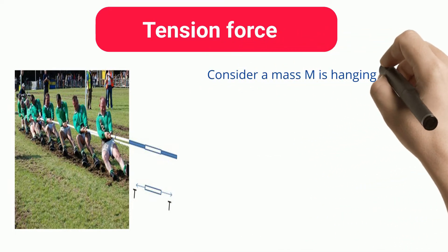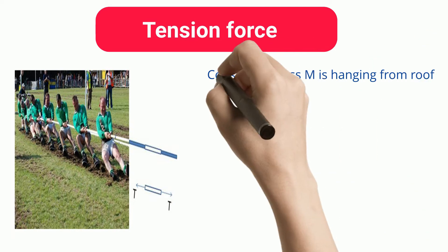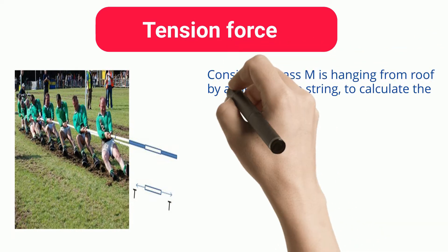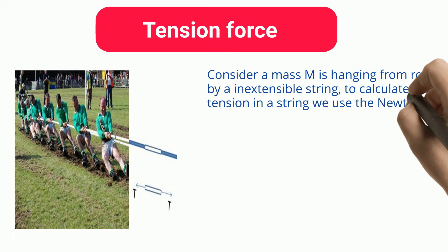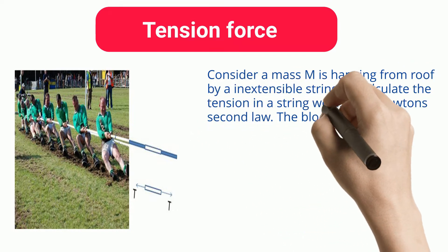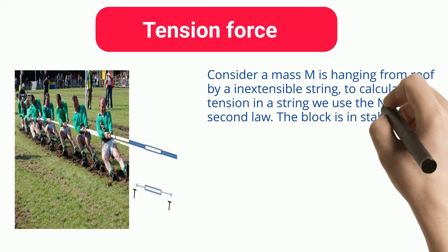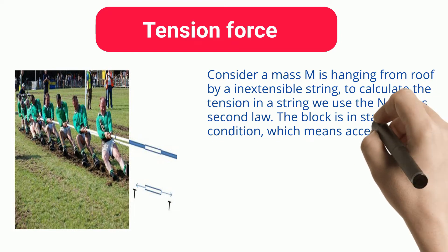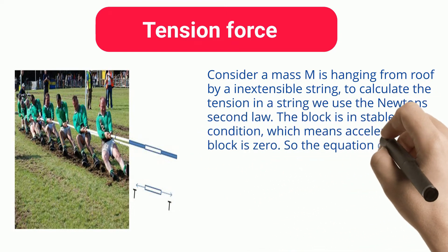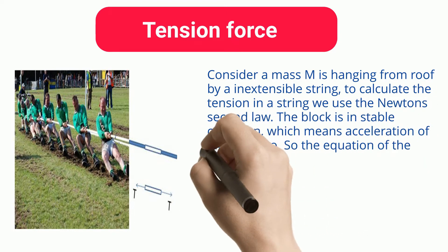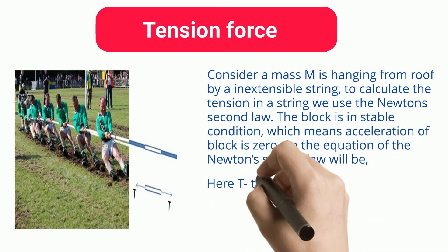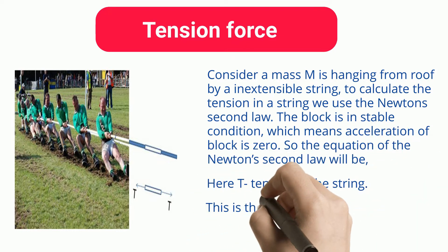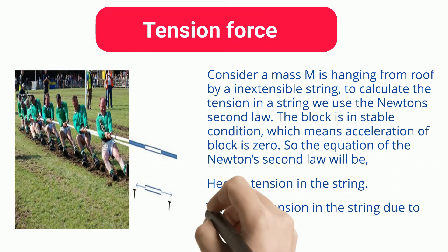Consider a mass M hanging from a roof by an inextensible string. To calculate the tension in the string, we use Newton's second law. The block is in a stable condition, which means the acceleration of the block is zero. So the equation of Newton's second law gives T, the tension in the string due to mass M.